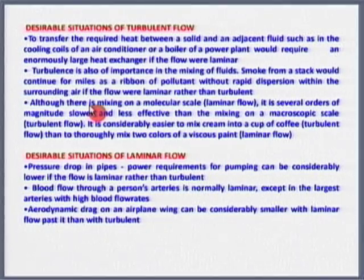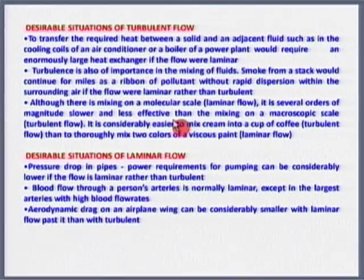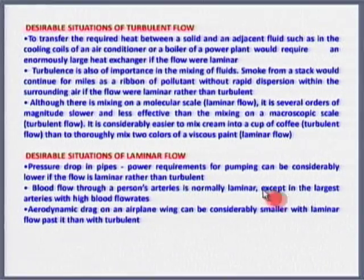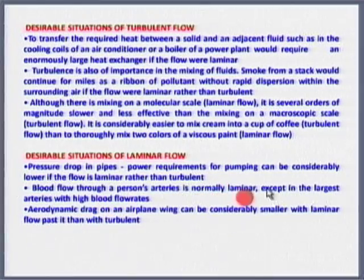That is an example of turbulence. Of course, there are situations where you would need laminar flow and situations where you would definitely want turbulent flow. Pressure drop in a pipe is greatly enhanced in turbulent flow situations, so pumping power becomes very high - it is low when the flow is laminar. Blood flow through an artery is normally laminar, except in large arteries like the aorta. Aerodynamic drag on an airplane wing can be considerably smaller when laminar flow is present rather than turbulent.